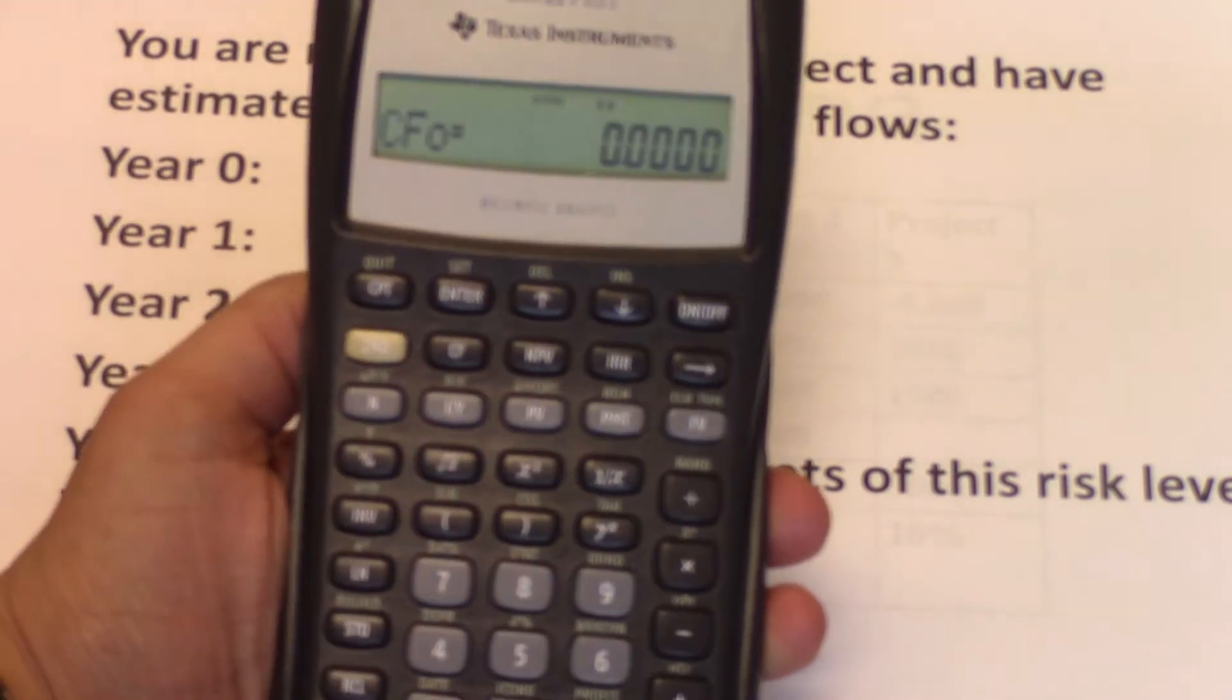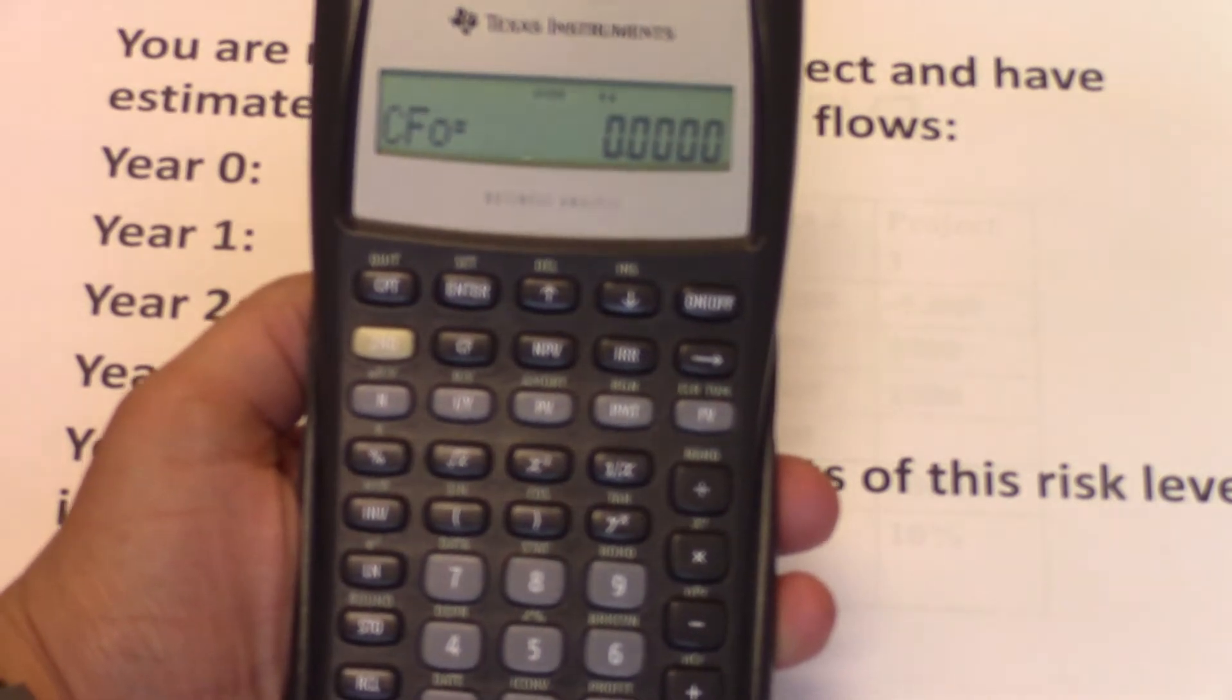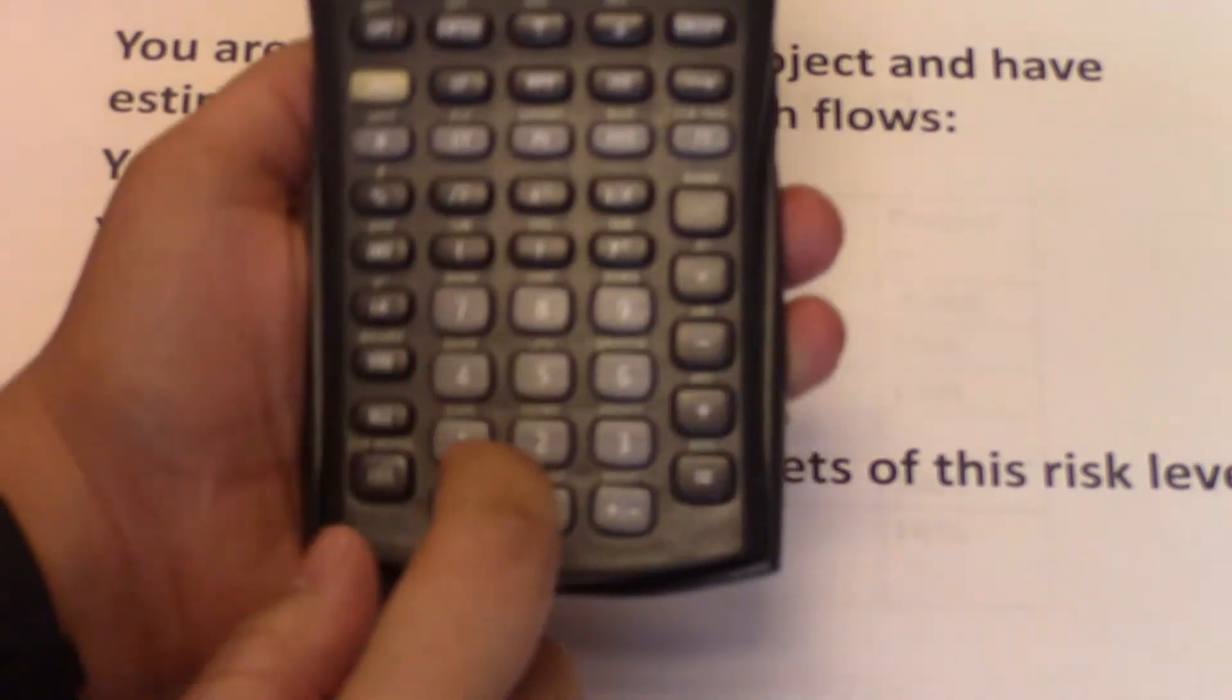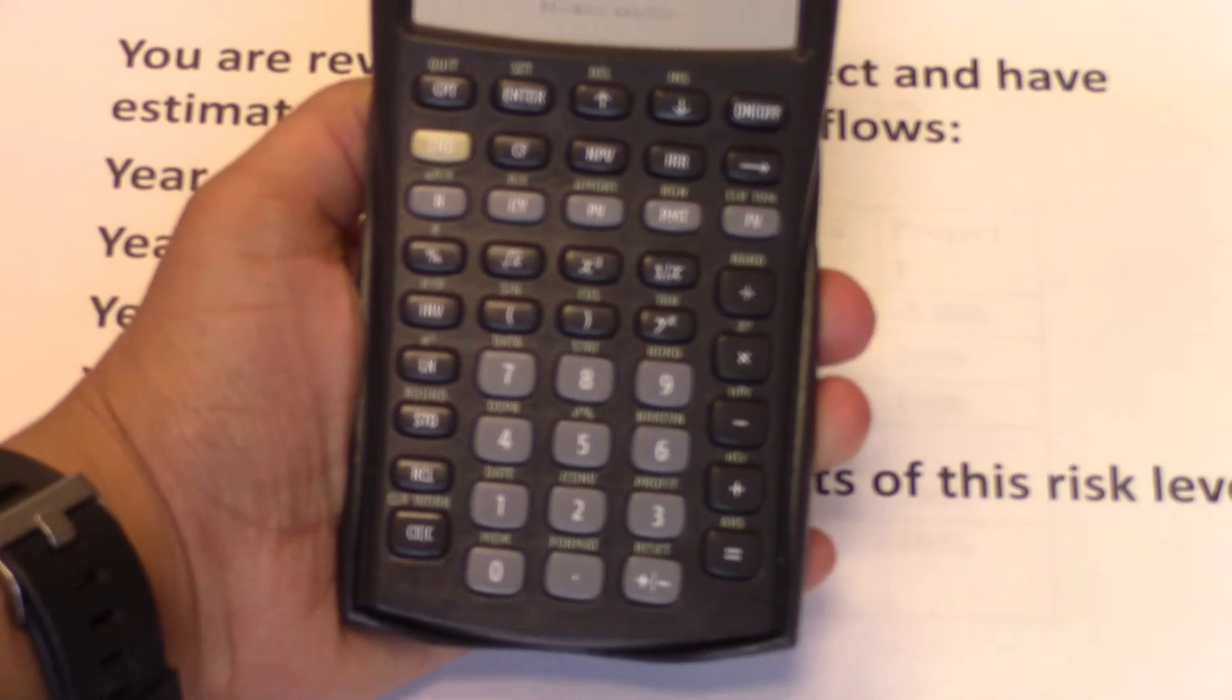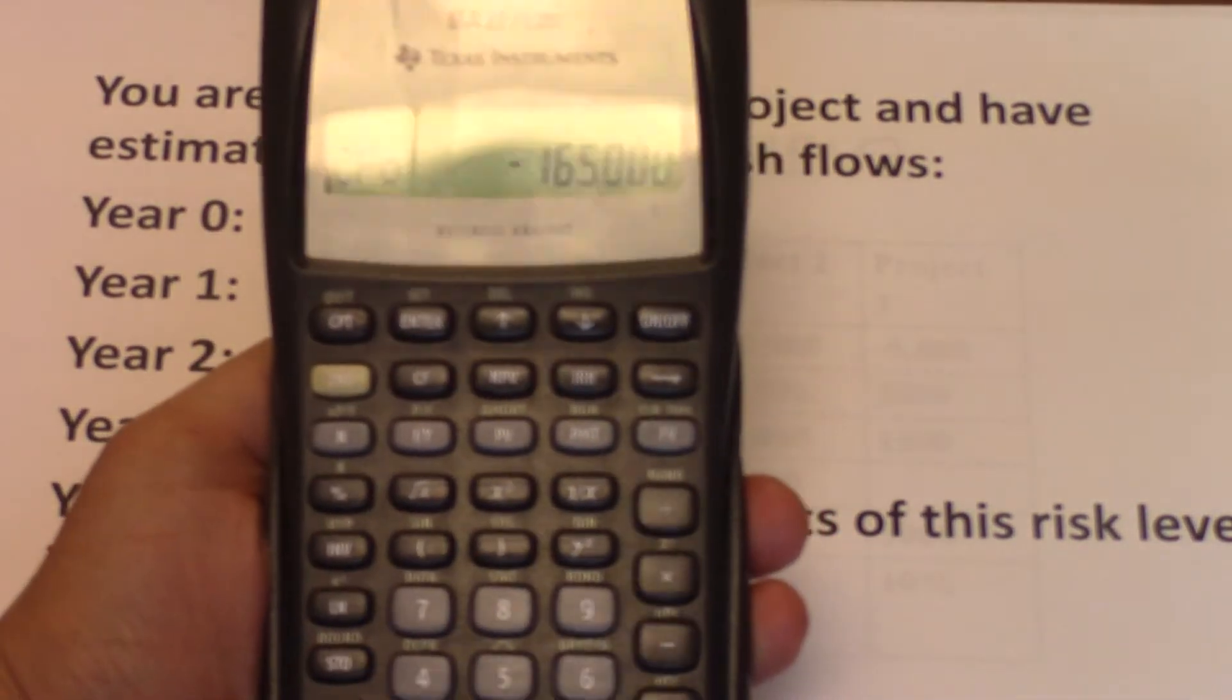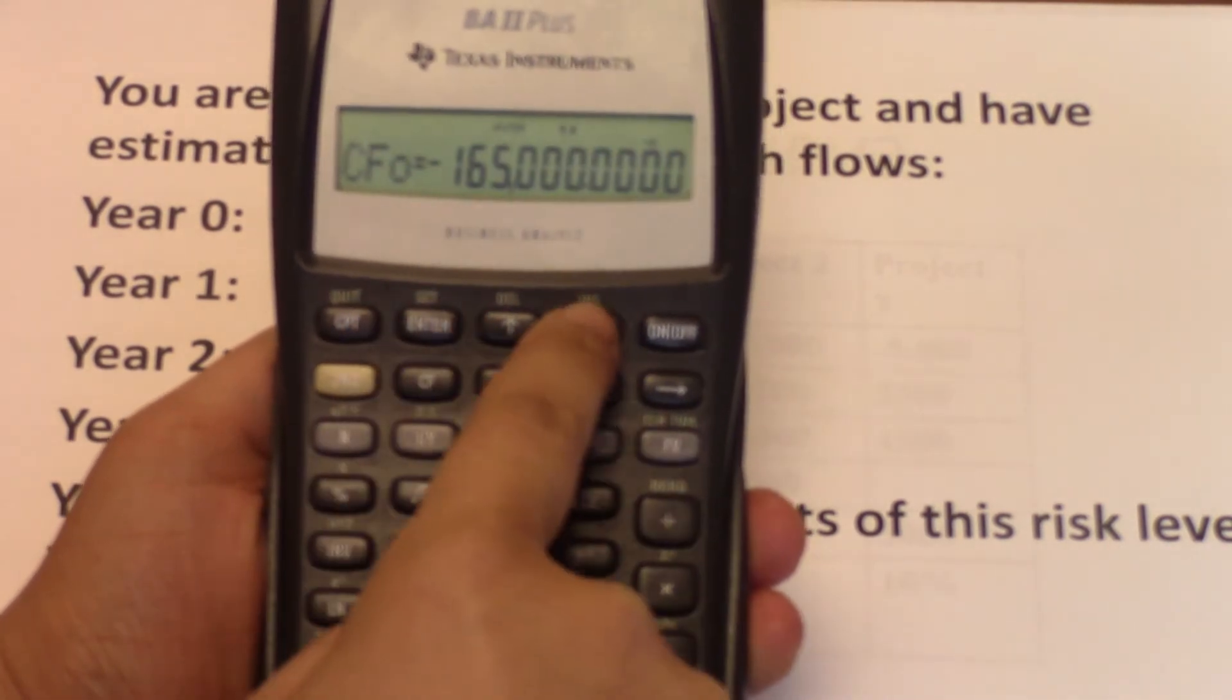Now you go to the CF. You're being asked for the cash flow at time zero. We are investing $165,000, so we input $165,000. We're going to input it as a negative number because this is a cash outflow. After you input $165,000, you do enter, down arrow.